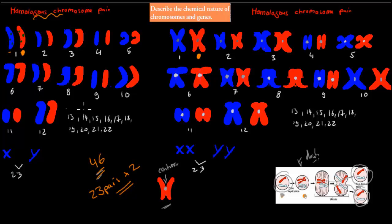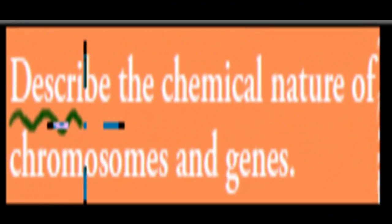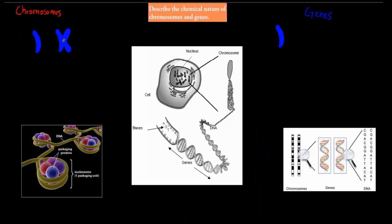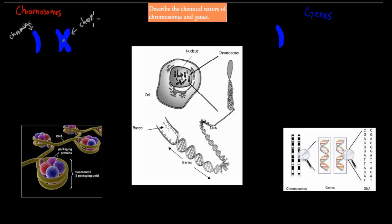Remember that number 46, and remember that we have 23 pairs that make up those 46. The dot point says: describe the chemical nature of chromosomes and genes — so what kind of chemicals chromosomes and genes are made up of. We said earlier that we call it a chromosome whether they're by themselves or doubled up — it's still the same stuff, just double the amount, because we have to split it into two new cells.